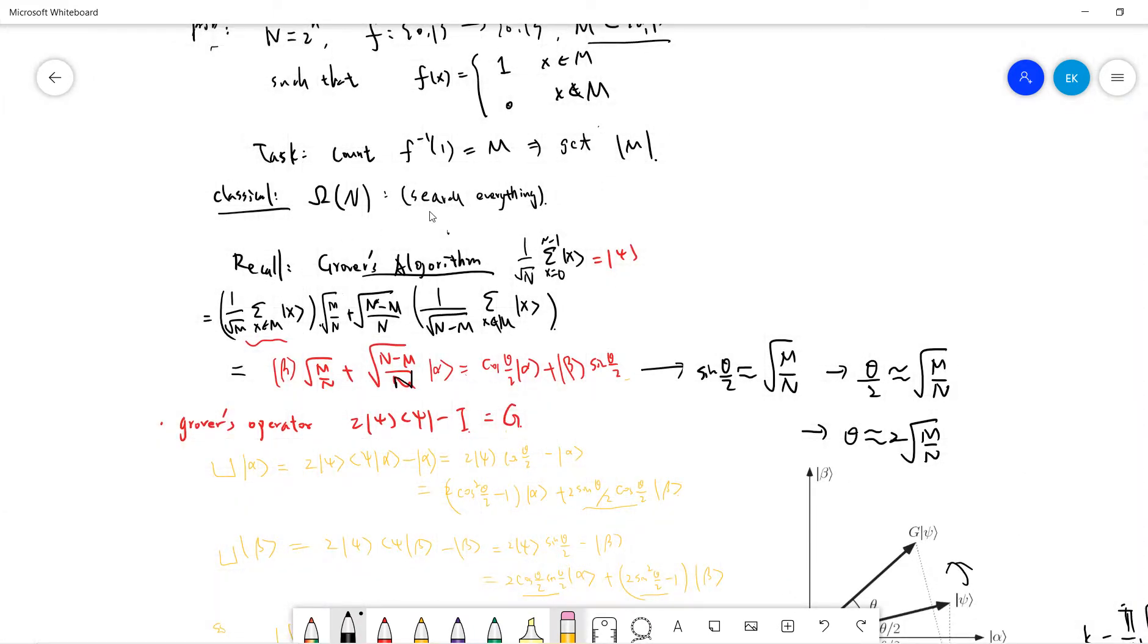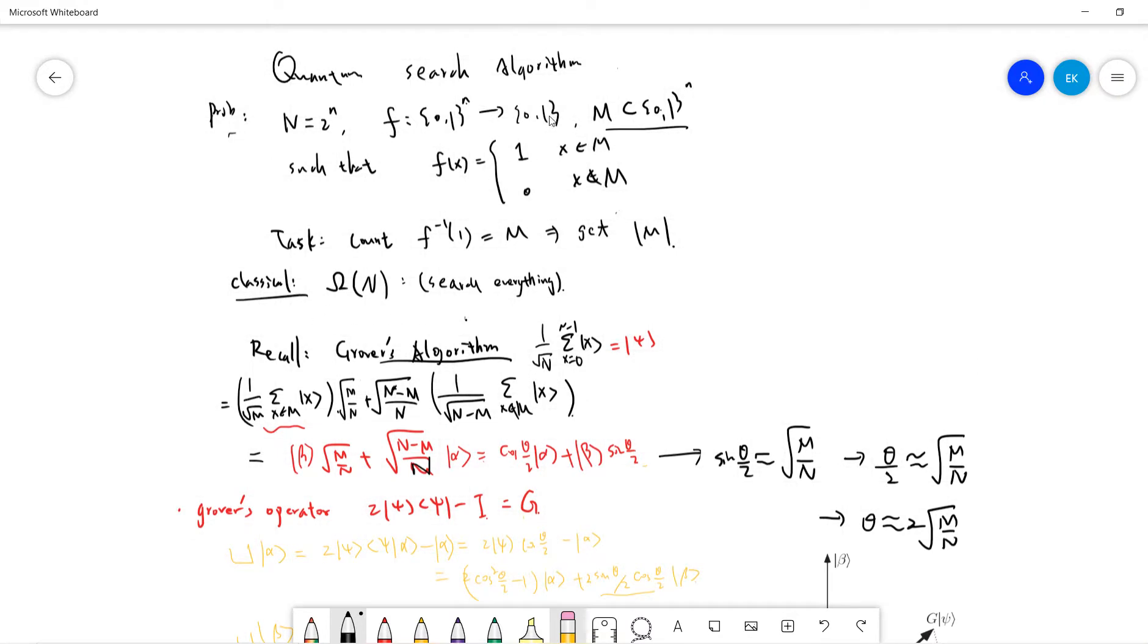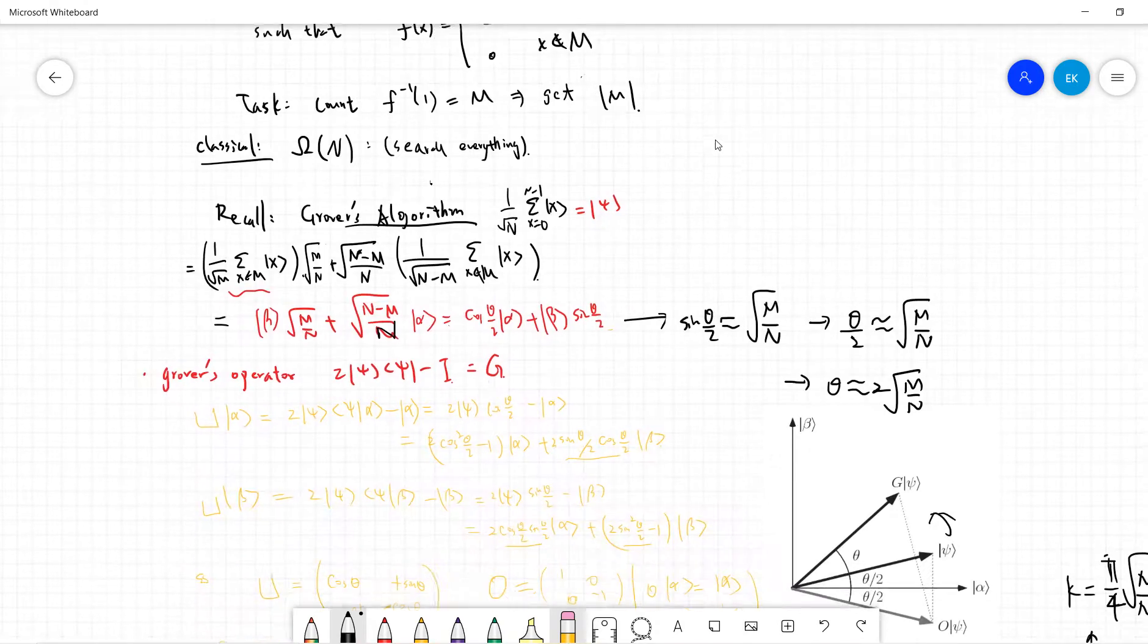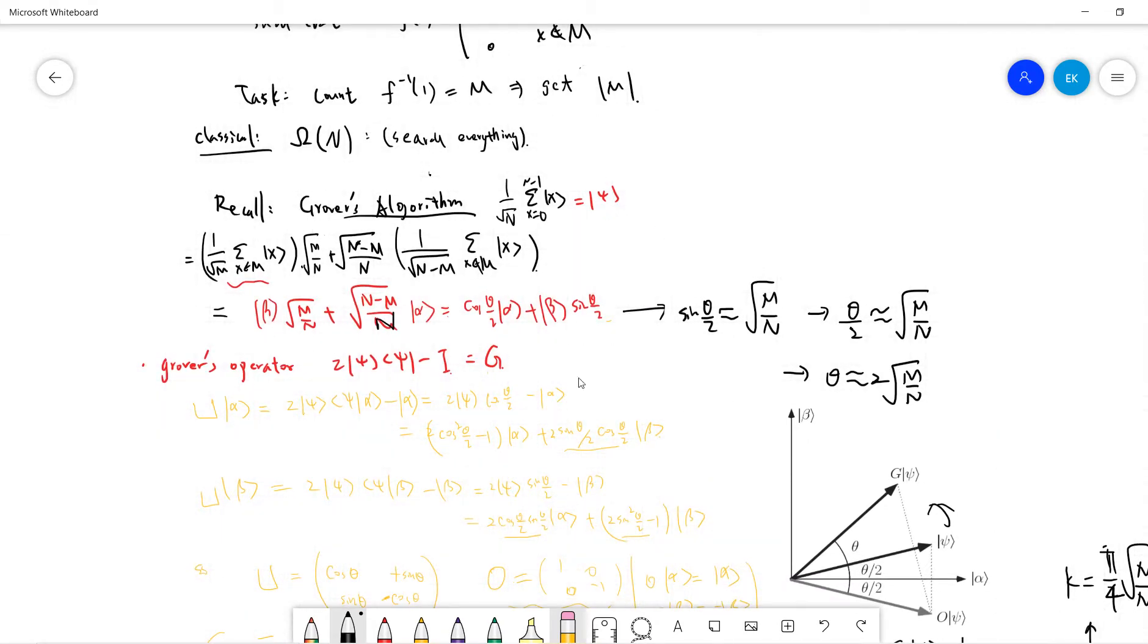So classically we need to search everything, right? There's no way, no other way you can do it, because somehow you need to know each element in M. But quantum way, we can see a proof.